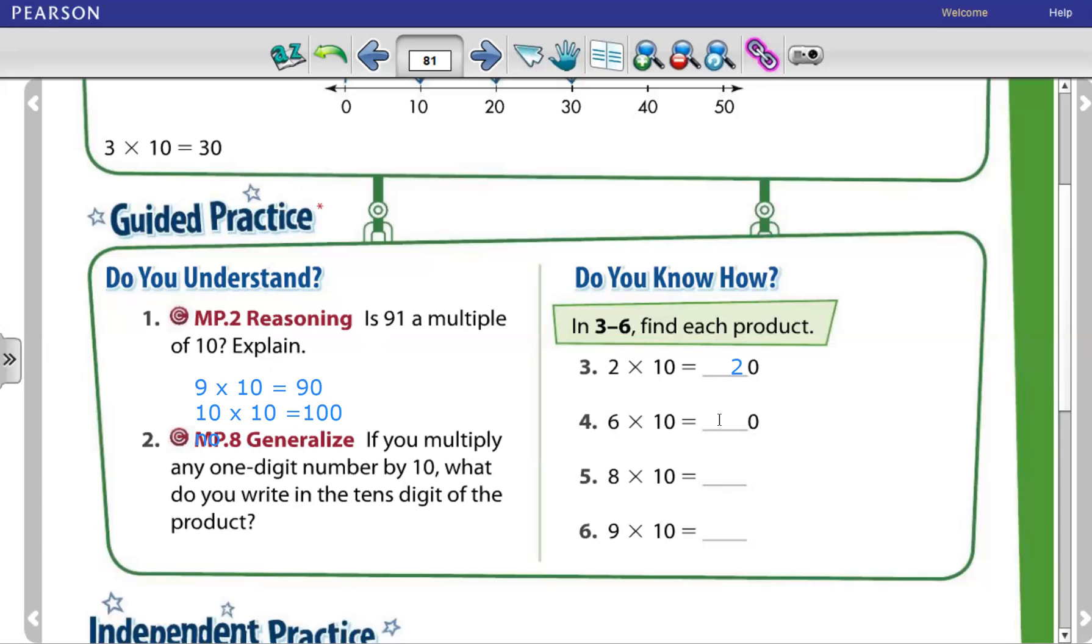Same for number 4. 6 times 10. 6 times 1 equals 6. With the 0, equals 60. 8 times 10 equals how much? 8 times 1 equals 8. With the 0, it becomes 80.